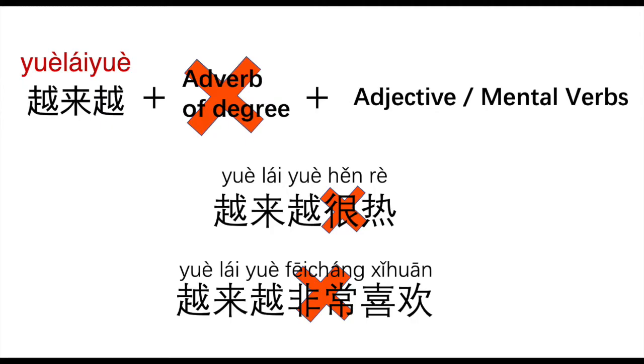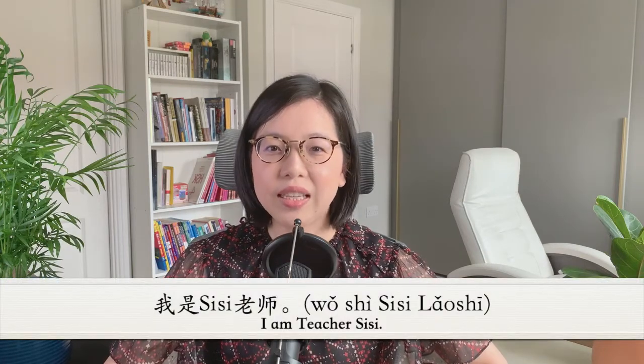Please note: no adverbial of degree can be used before the adjective or mental verb in this structure. Phrases such as 越来越很热 or 越来越非常喜欢 are not acceptable. That's all for today's lesson. Hope you learned a lot from this video. Any questions, please let me know. Please subscribe if you like this video. This is Mandarin HSK level 3. You can also find my whole series of beginner level and elementary level in the playlist on my channel. 我是CC老师。 谢谢。再见。 Bye bye.